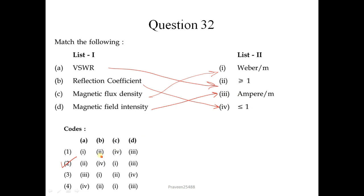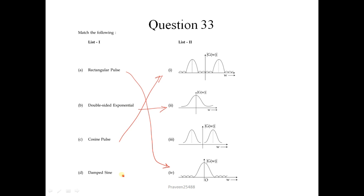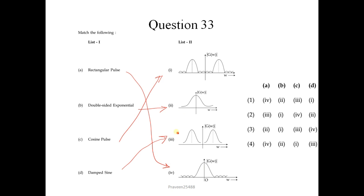Question number 33 - match the following. In list 1 signal names are given, and in list 2 their Fourier transforms (frequency domain representations) are given. For rectangular pulse, its Fourier transform looks like a sinc function. For double-sided exponential, it is a Lorentzian shape. For cosine pulse, it is this one. For damped sine, it is option 3. The correct sequence is 4-2-1-3.